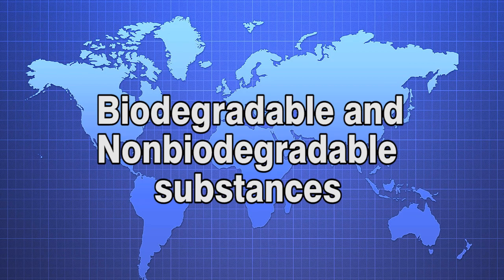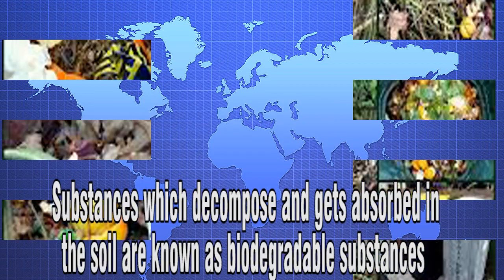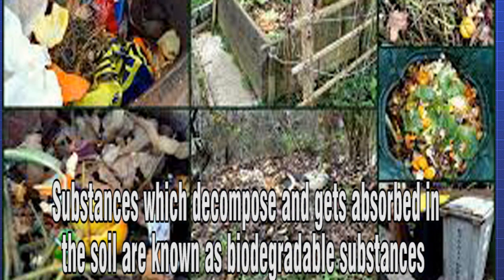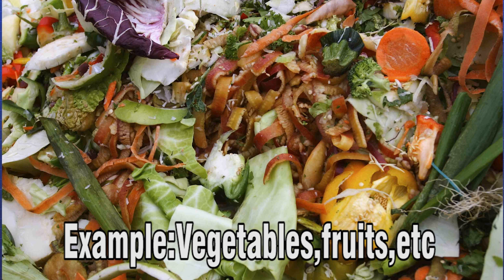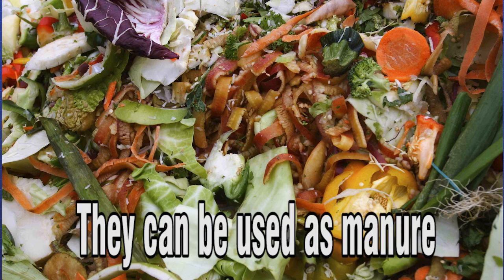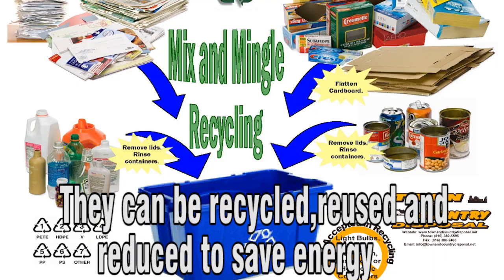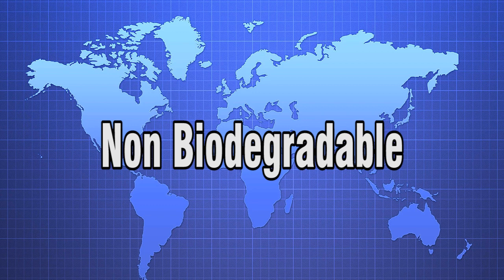Biodegradable substances are those which decompose and get absorbed into the soil. Examples include vegetables and fruits. They can be used as manure and can be recycled, reused, and reduced to save energy.